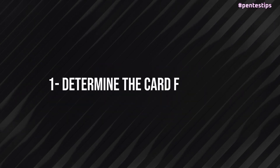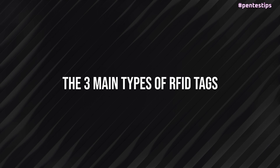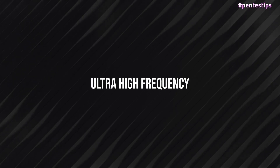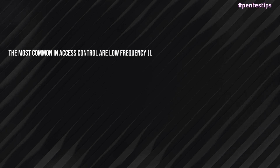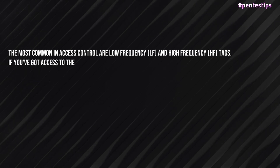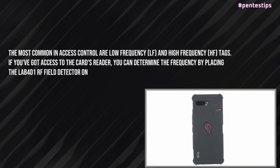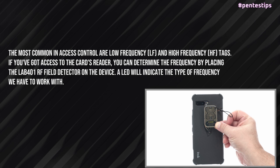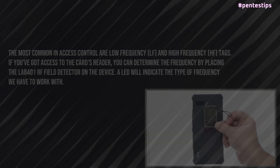First, we have to determine the card frequency. There are three main types of RFID tags: high frequency, low frequency, and ultra-high frequency. The most common in access control are low frequency and high frequency tags. If you've got access to the card's reader, you can determine the frequency by placing the LAB401 RF field detector on the device. A LED will indicate the type of frequency you have to work with.